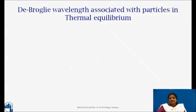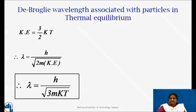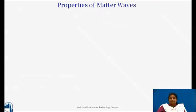If particles are in thermal equilibrium at temperature T, then their kinetic energy is given by 3 by 2 kT. Therefore, lambda is equal to h upon root 2m kinetic energy. So, the wavelength is equal to h upon root 3m into k into T.